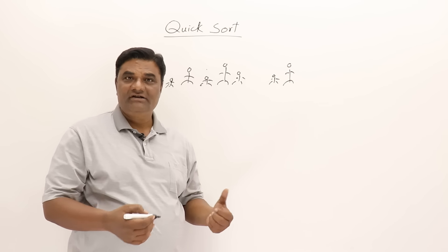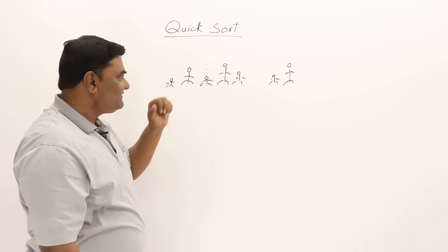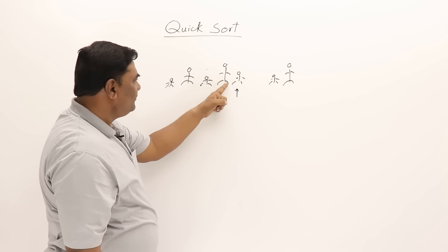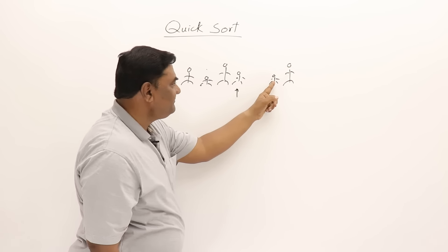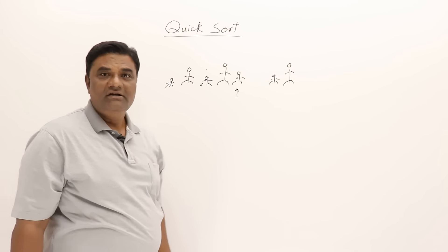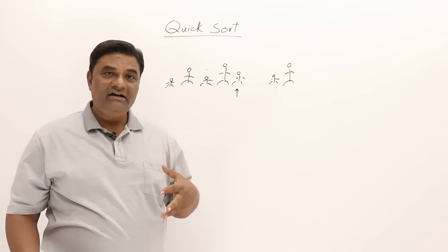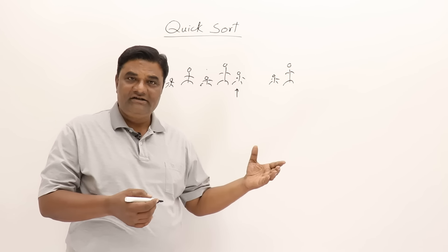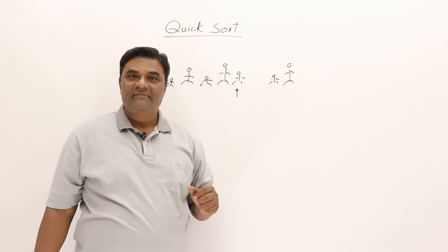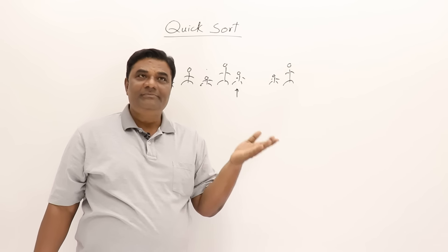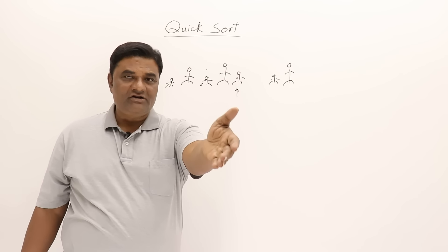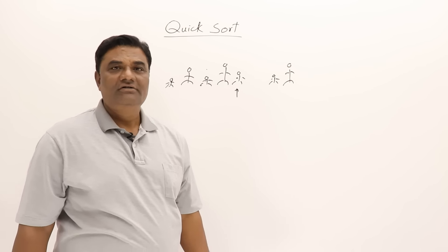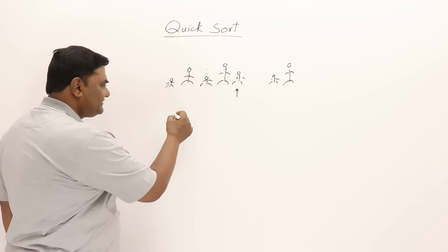The rest of the students will arrange themselves by comparing with each other. For example, one student will tell a taller person to go to the back and ask a shorter person to come in front. Similarly, each student finds their own position by deciding who should be in front and who should be behind them. This is the core idea of quicksort.